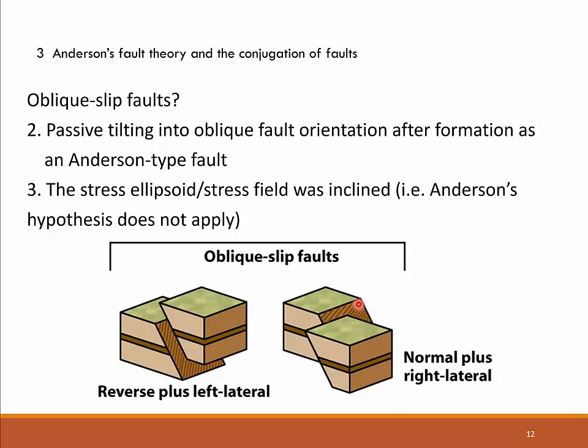Here is another example of an oblique-slip fault with a normal component and a dextral right-lateral component — the hanging wall block moves downward along this oblique lineation. Such oblique orientations may result from passive tilting of a former Anderson-type fault, or from a stress ellipsoid not in agreement with Anderson's hypothesis.